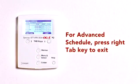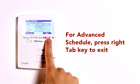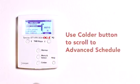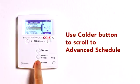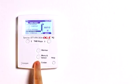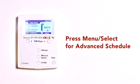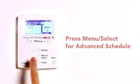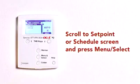In that case, press the right tab key to exit the screen. Then, using the colder button, scroll down to advanced schedule. Press the menu select button to select advanced schedule, then scroll down to the set point or schedule screen and press menu select again.